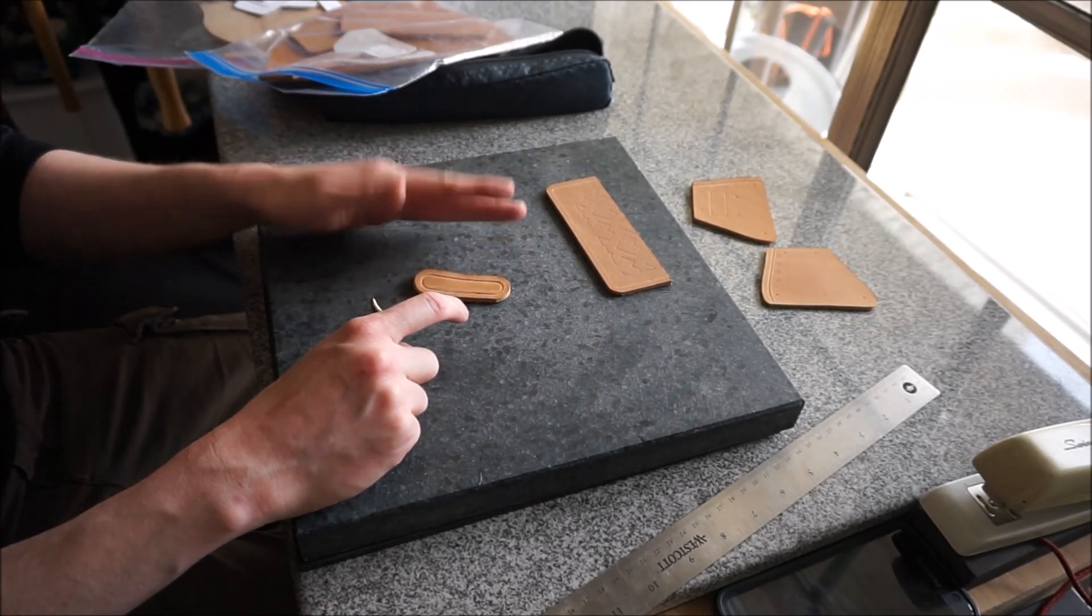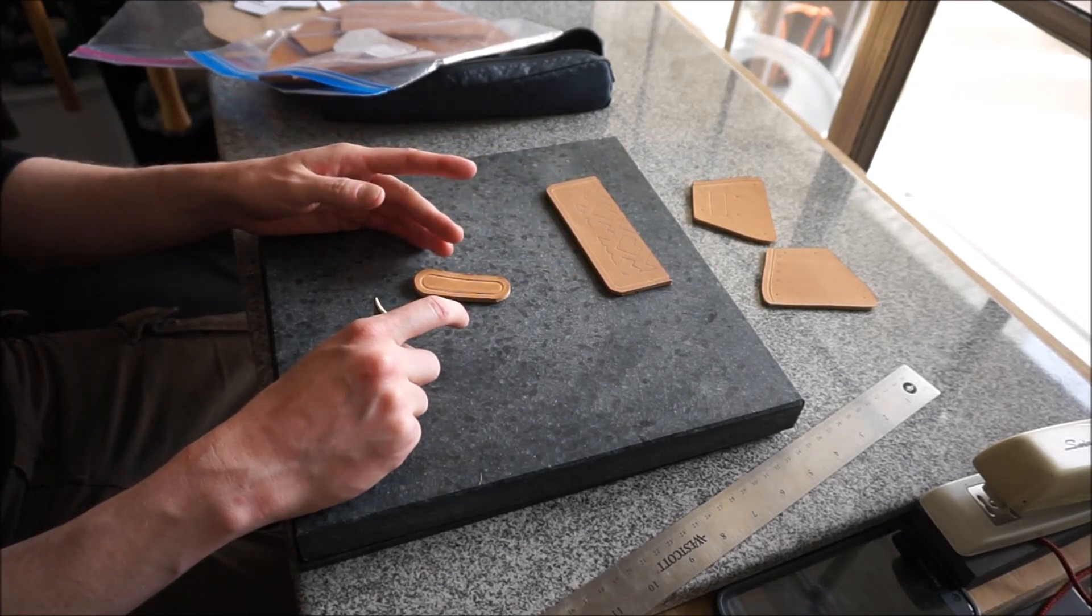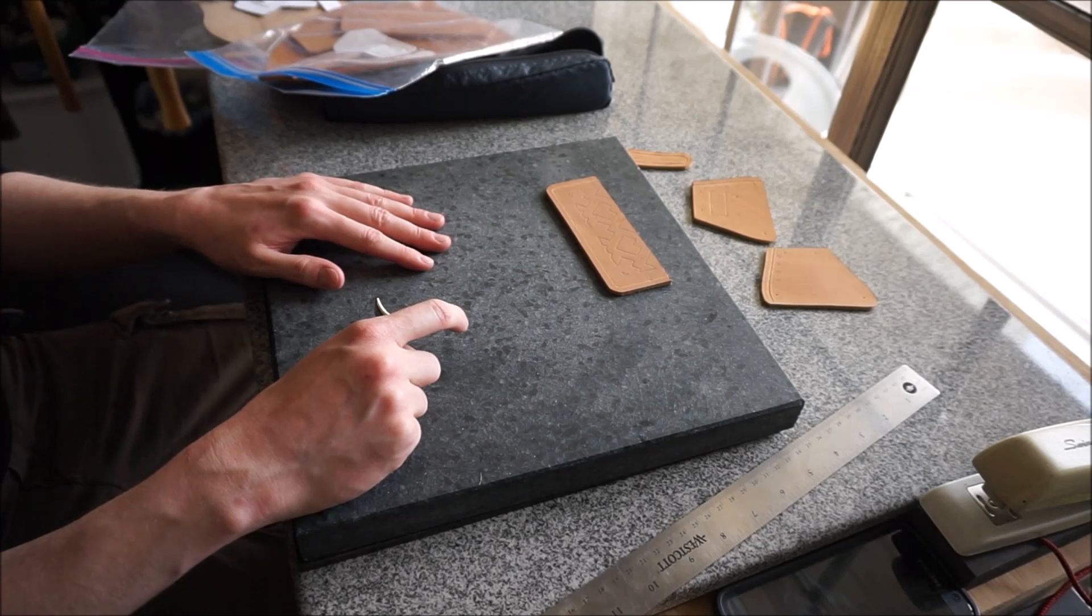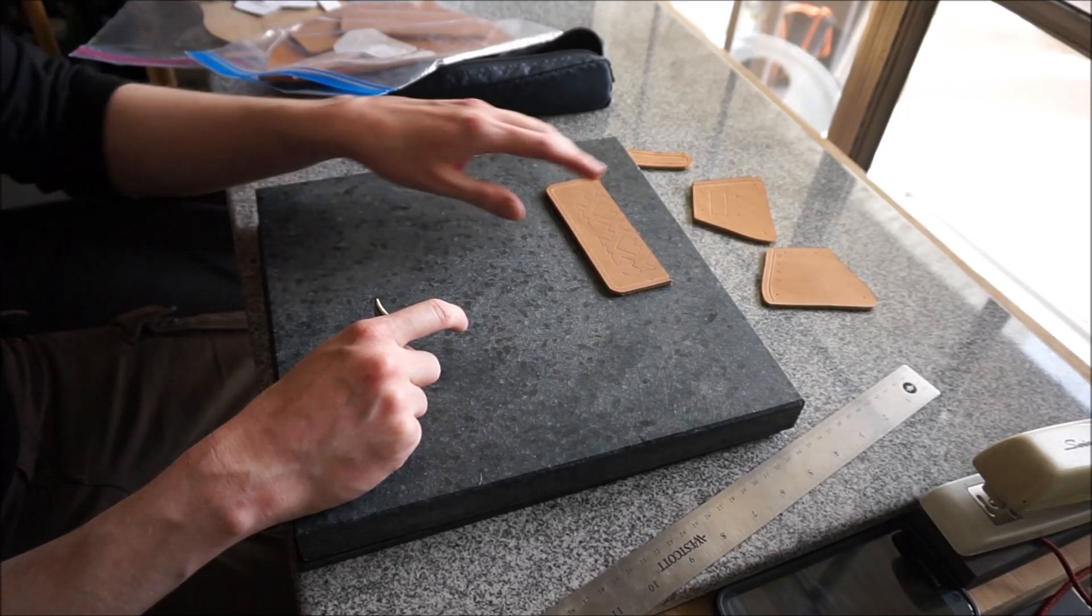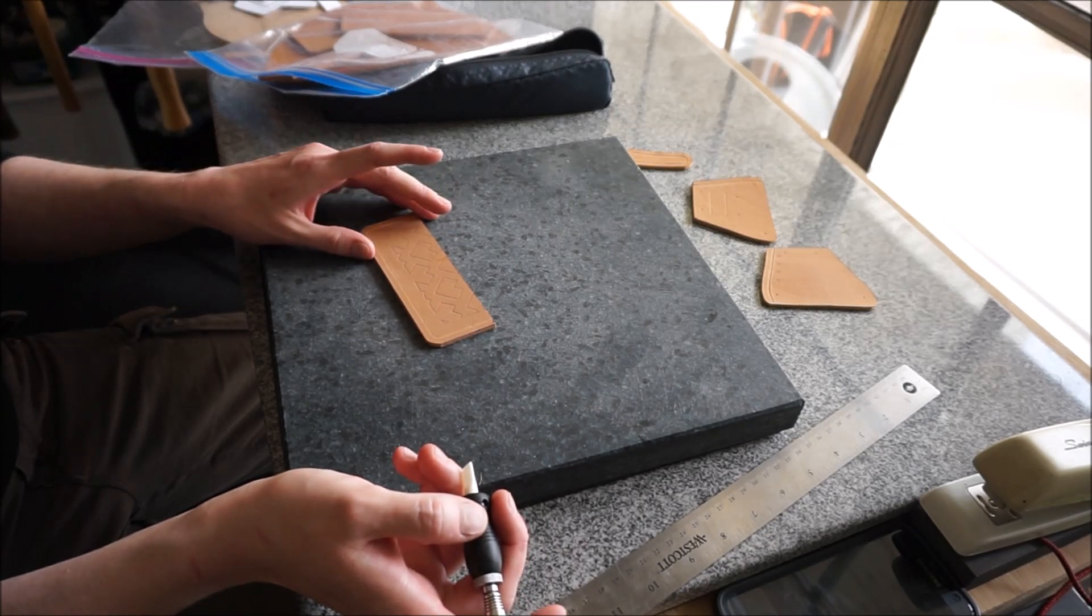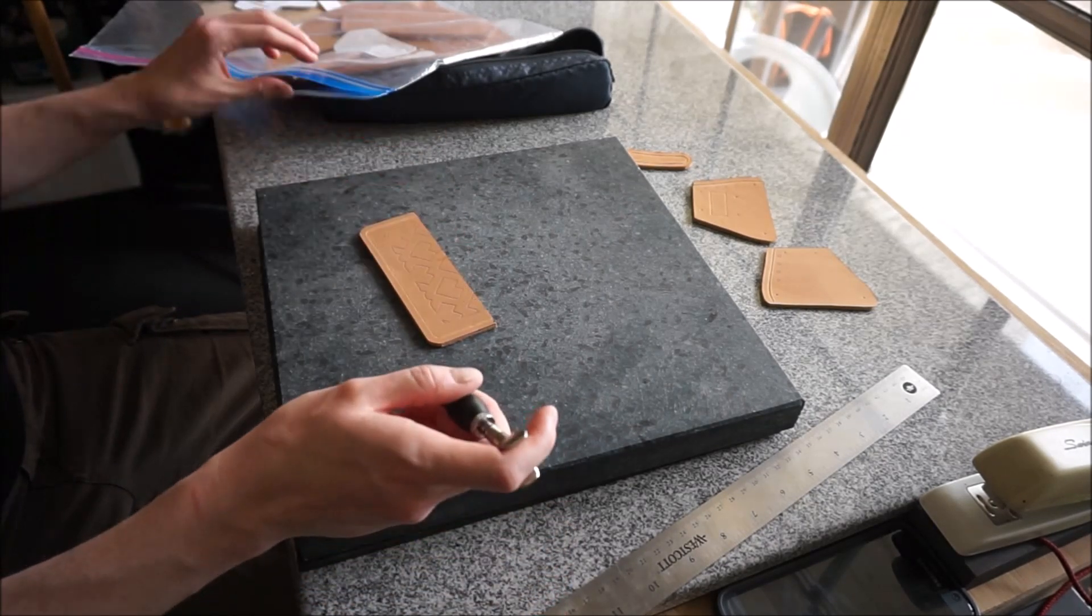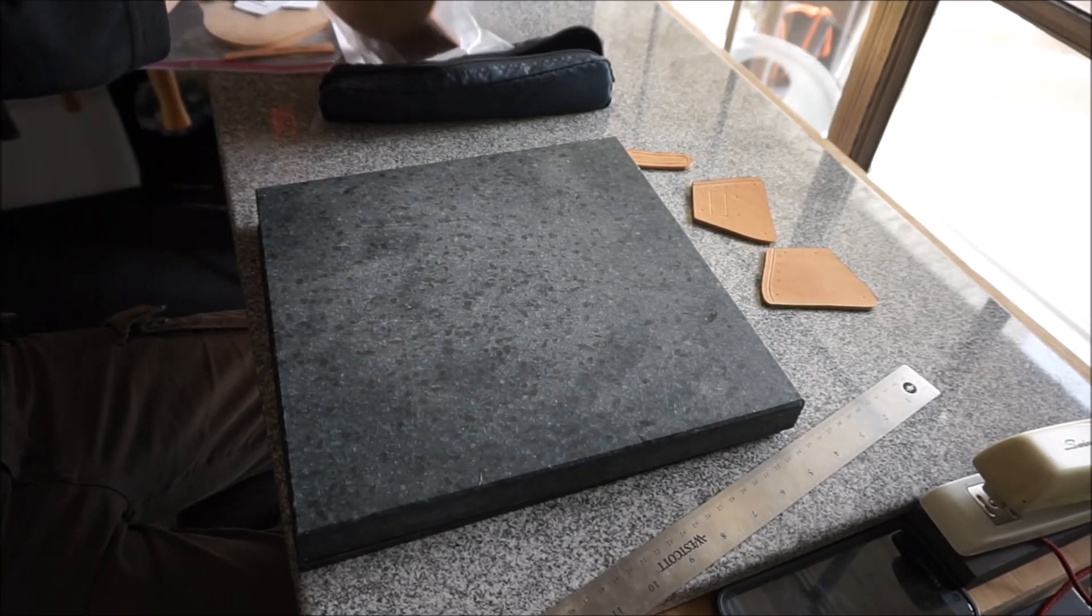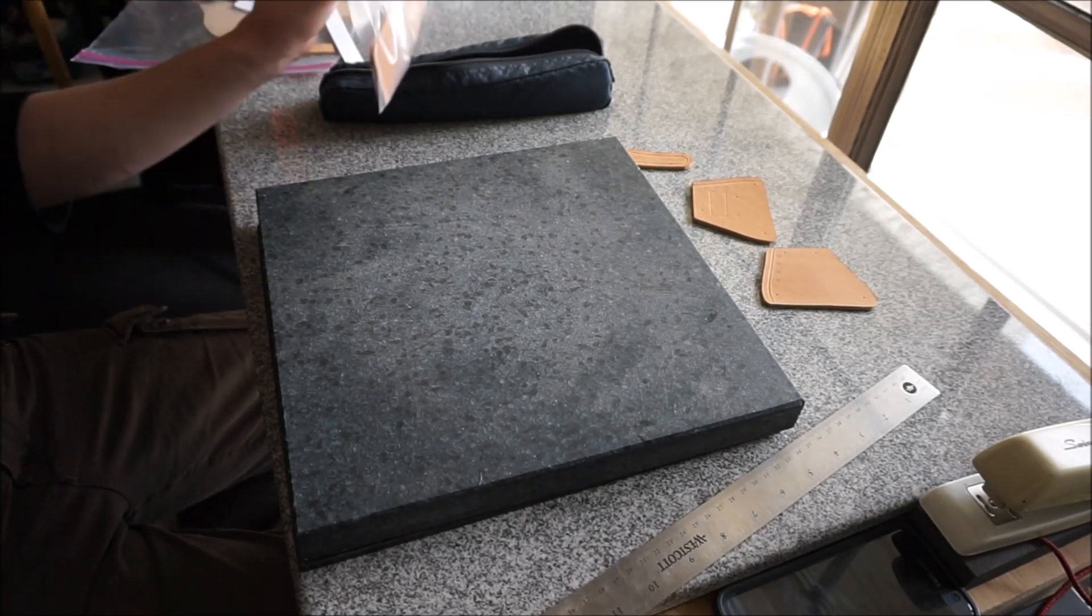This will be okay. When I go to stamp it, the stamp will smooth out that line, but that's not great. That's not a great way to start. That's not a good example for you guys. So, and what you do with the swivel knife now is just follow all of that.